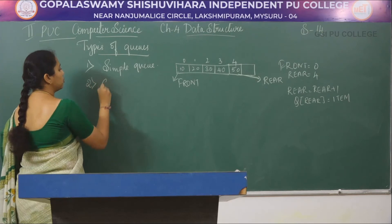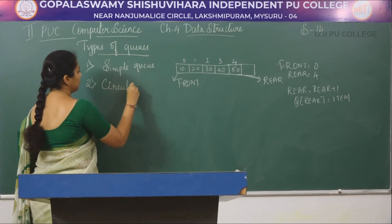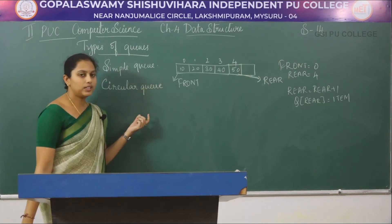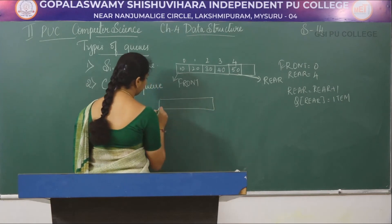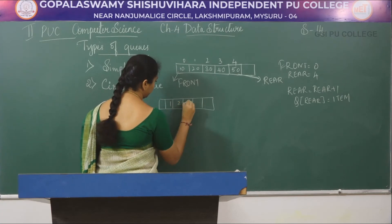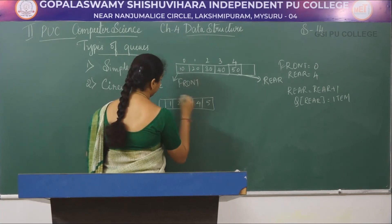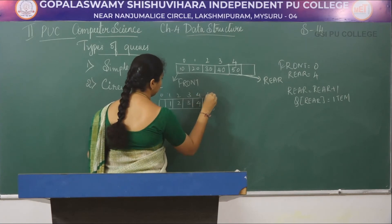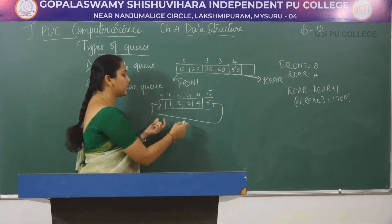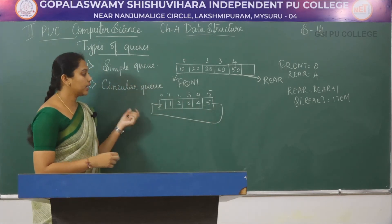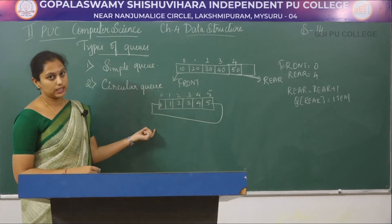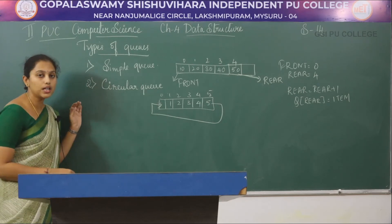The next type is circular queue. A circular queue is a queue in which all nodes are treated as circular, such that the last node follows the first node to form a circle.